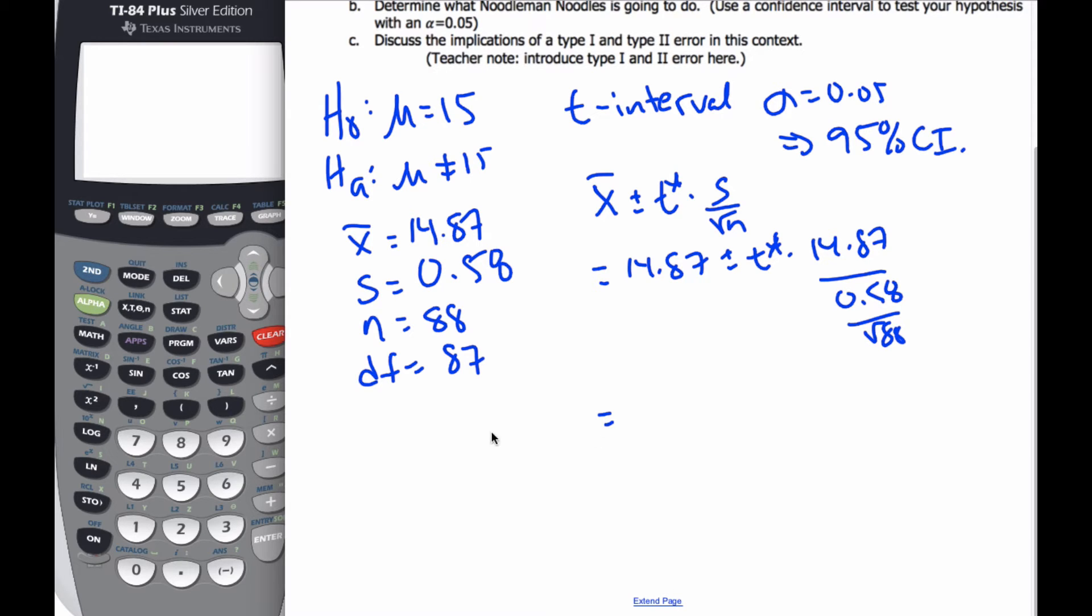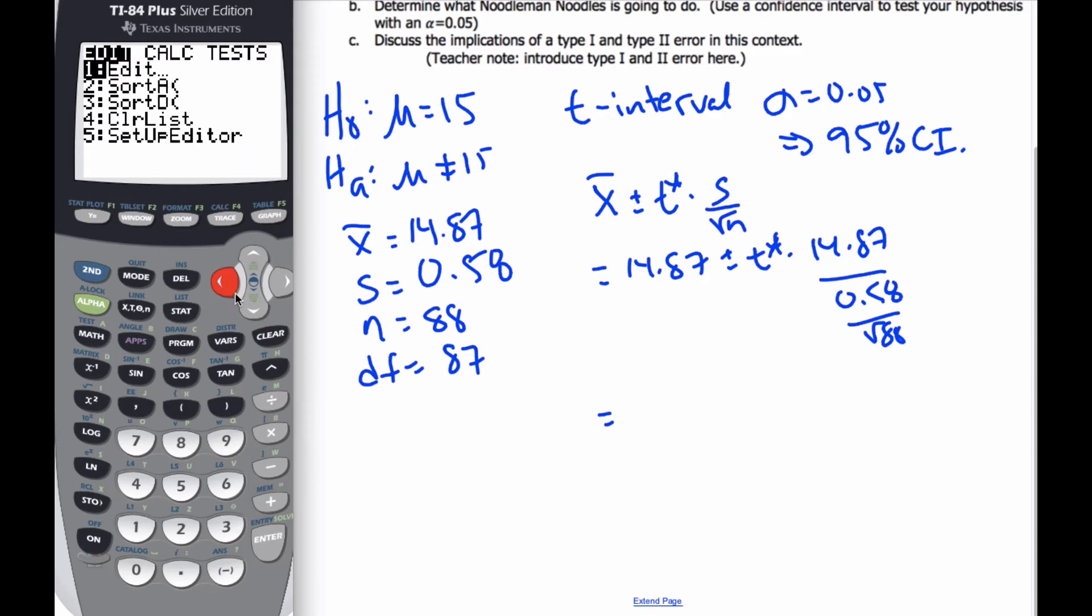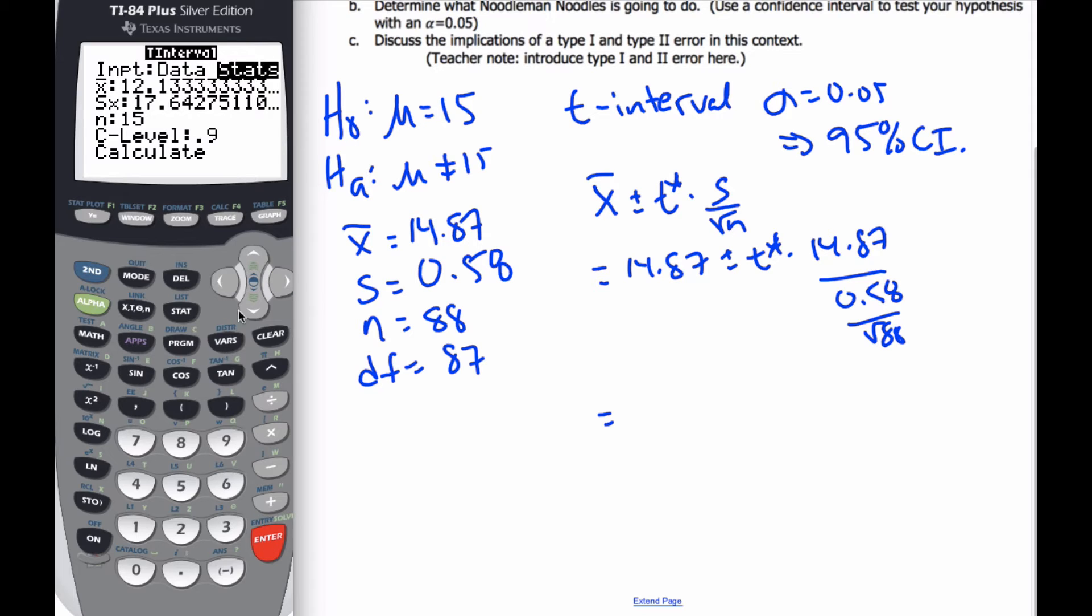I'm going to throw this in my calculator. I have statistics, not data. My stats say 14.87, 0.58 is the standard deviation, n is 88, confidence level is 0.95, and I'm going to calculate.